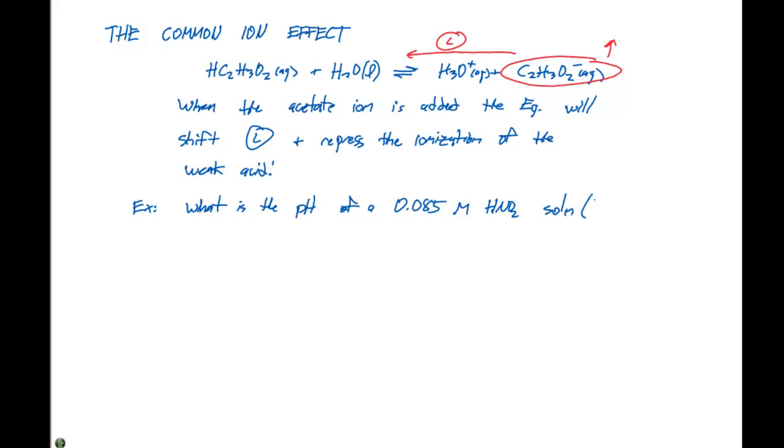The solution has a Ka equal to 4.5 × 10^-4 when 0.10 molar NaNO2 is added.